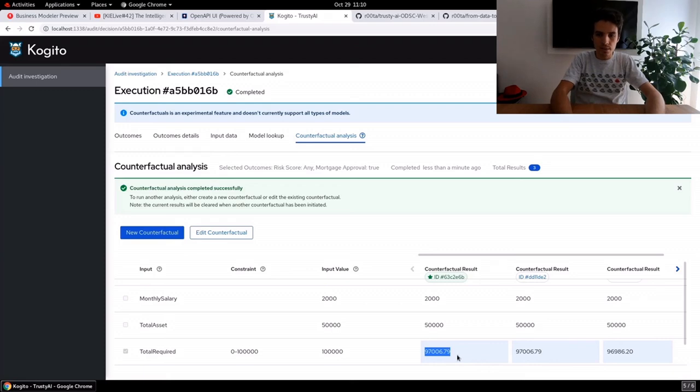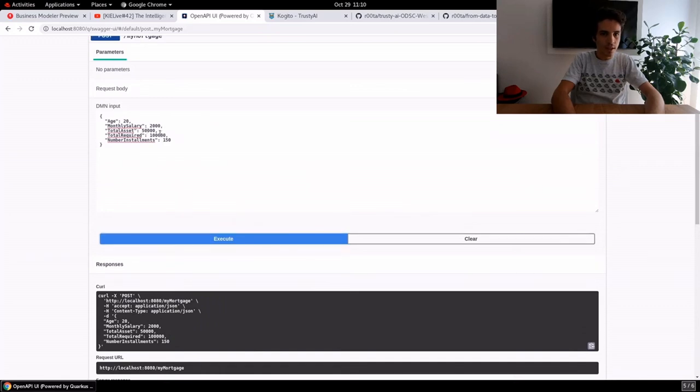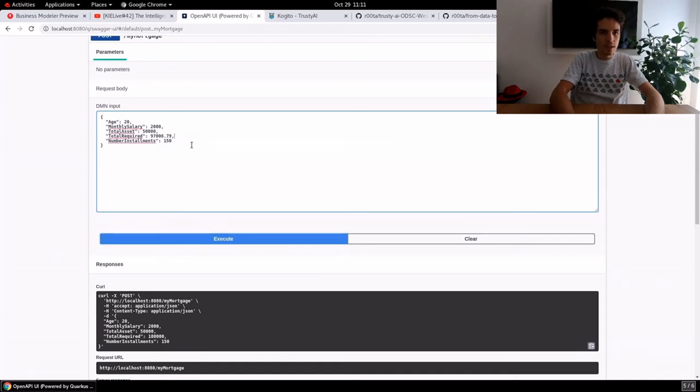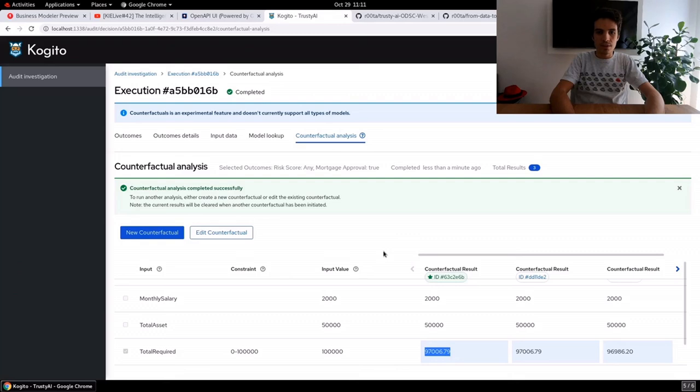We go back to the Swagger UI and let's try with 97,000. And you see here now that the mortgage was approved. So this was the counterfactual analysis.